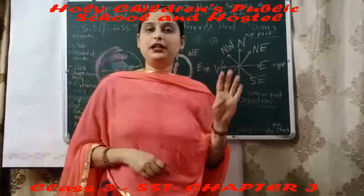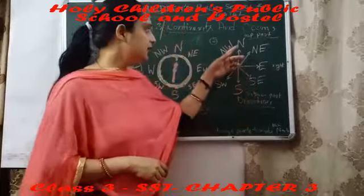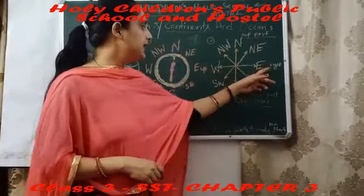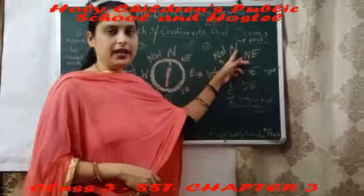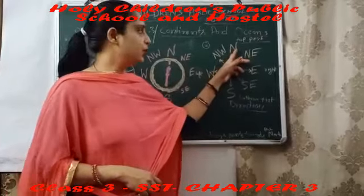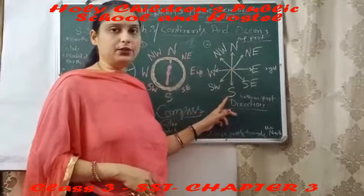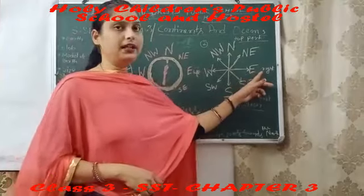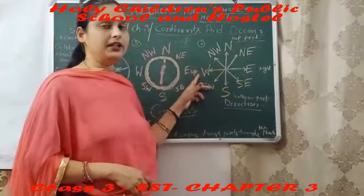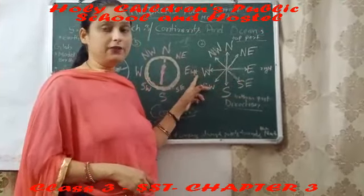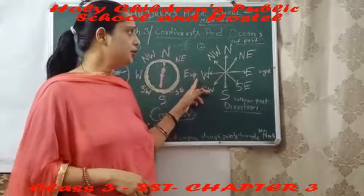As we know, there are mainly four types of directions: north, south, east, and west. The top part of the direction is known as north. The bottom part is known as south. The right part is known as east. And the left part is known as west.